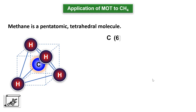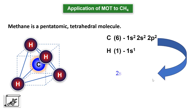The central atom carbon has electronic configuration 1s2, 2s2, 2p2, whereas hydrogen has 1s1. In the case of the methane molecule, we have to consider all the valence orbitals of the carbon atom: 2s, 2px, 2py, and 2pz.